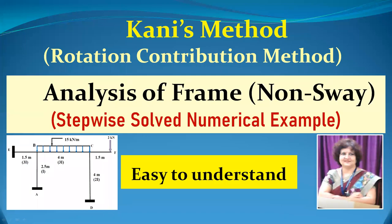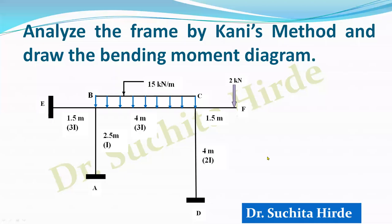Welcome to the video series on analysis of indeterminate structures using Kani's method. In this we are learning how to analyze continuous beams and frames using Kani's method. In this video you will learn analysis of a frame in which there are more than two members meeting at a joint using Kani's method. This is a non-sway problem because there is a support which restricts the horizontal movement of this frame, so we are going to analyze this using Kani's method.